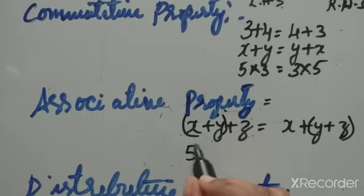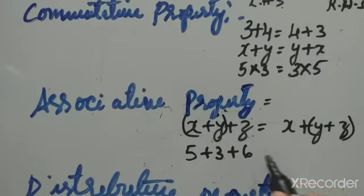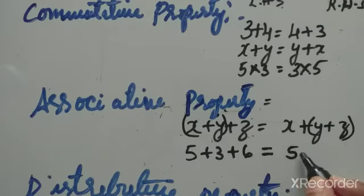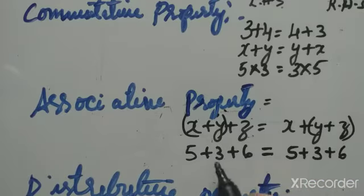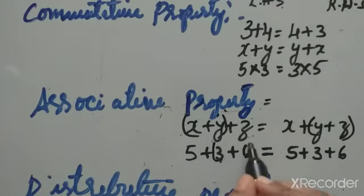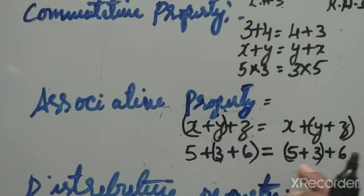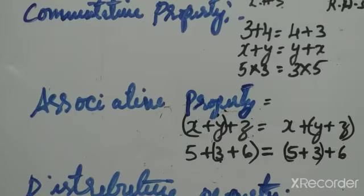Another example: 5 plus 3 plus 6. On the left-hand side, the first number is 5, second is 3, third is 6. On the right-hand side, it is also 5, 3, and 6 — same numbers. If the bracket is for the second and third terms on the left, then put the bracket for the first and second on the right. Numbers and letters are one and the same; only the brackets change.